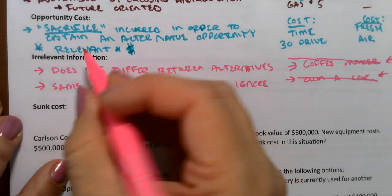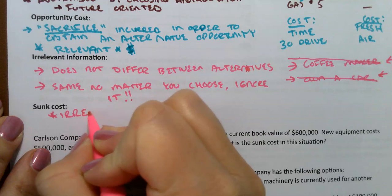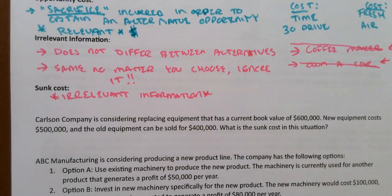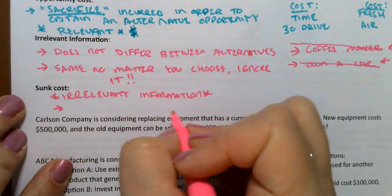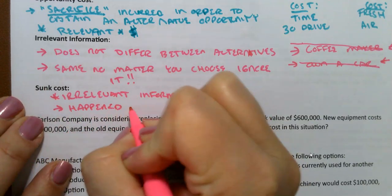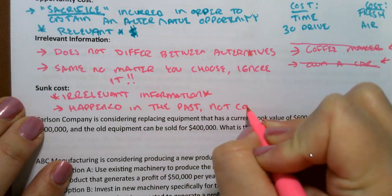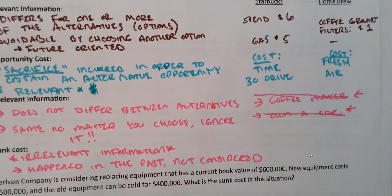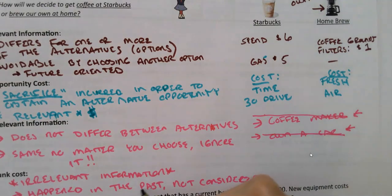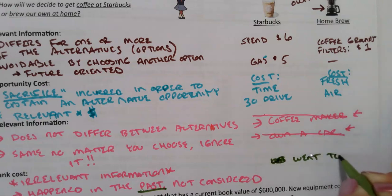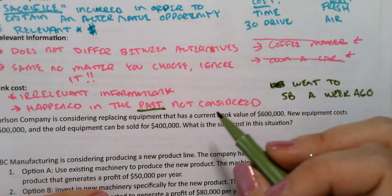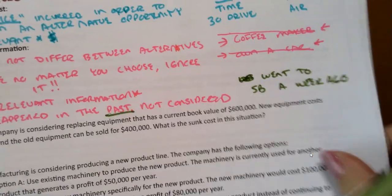Some costs are also irrelevant — specifically costs that happened in the past, known as sunk costs. These should not be considered at all in current decision making. For example, if you went to Starbucks a week ago, that's great, but it happened in the past. My husband always says he doesn't want tacos for dinner because he had them for lunch — but that's a sunk cost, it doesn't matter. You went to Starbucks a week ago; why does that matter? We're talking about today. We ignore things that happened in the past.